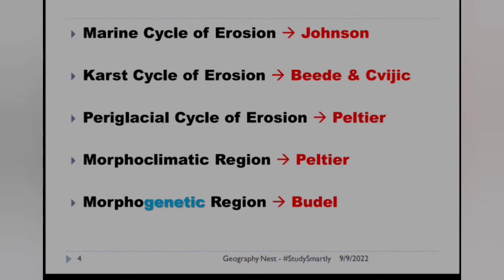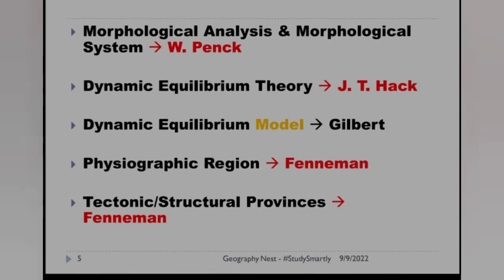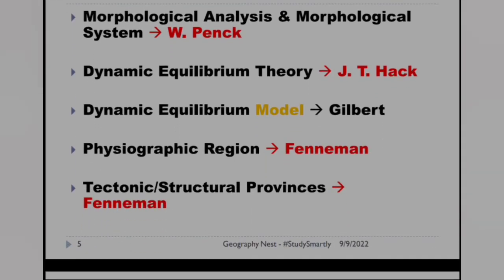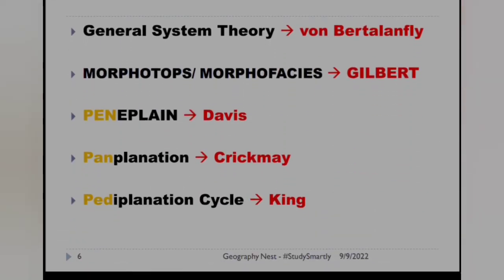Morphoclimatic region — Peltier. But morphogenetic region was given by B.D.L. Next, morphological analysis and morphological system — this is associated with W. Penck. Dynamic equilibrium theory — J.T. Hack. Dynamic equilibrium model — Gilbert. Physiographic region — Phenemen. Tectonic or structural provinces — Phenemen. General system theory — Born, Bartle and Fly. Morphotops or morphophasis — Gilbert.